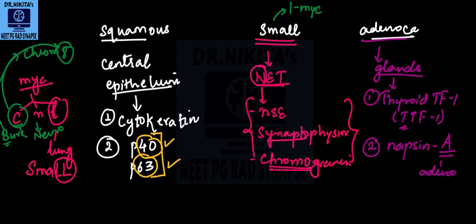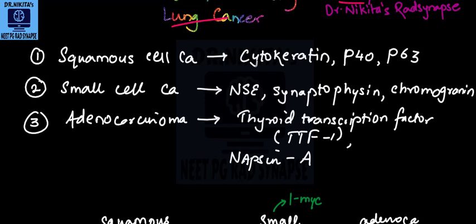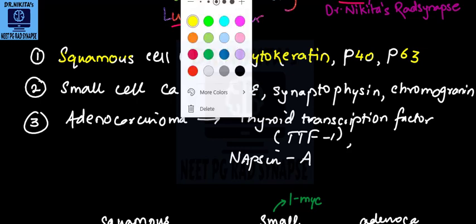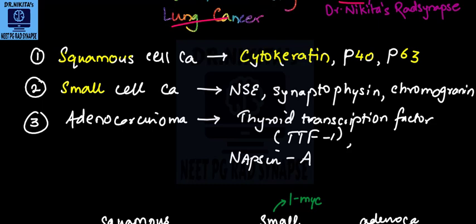So let us revise the quick list that we have posted here. Remember, so we have in squamous cell carcinoma, we have cytokeratin, epithelial tumor, P40 and P63 is the age at which it is positive. And then we have small cell carcinoma, small is neuroendocrine, so neuron specific enolase, synaptophysin and chromogranin. Adeno is gland, so thyroid transcription factor and Napsin A.